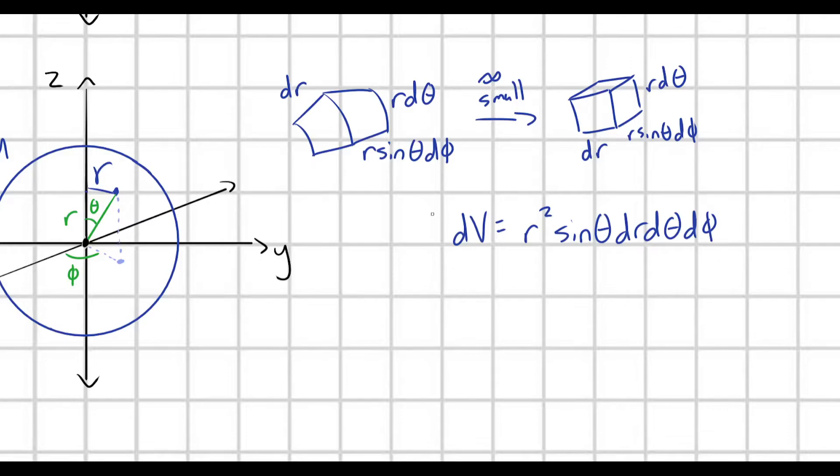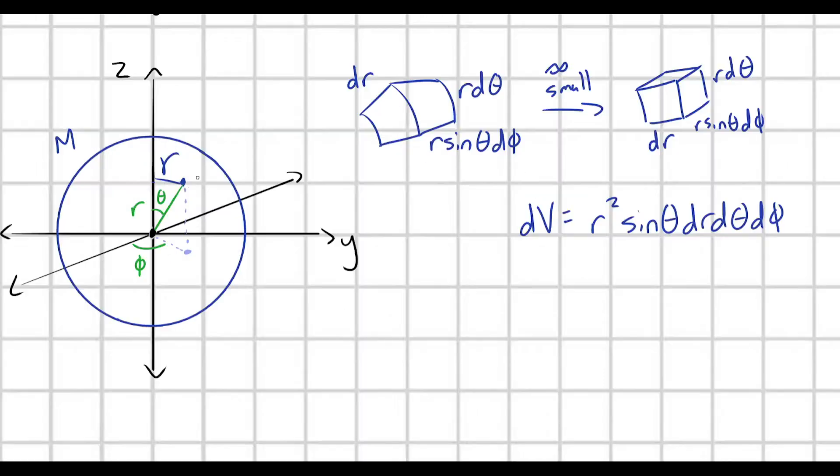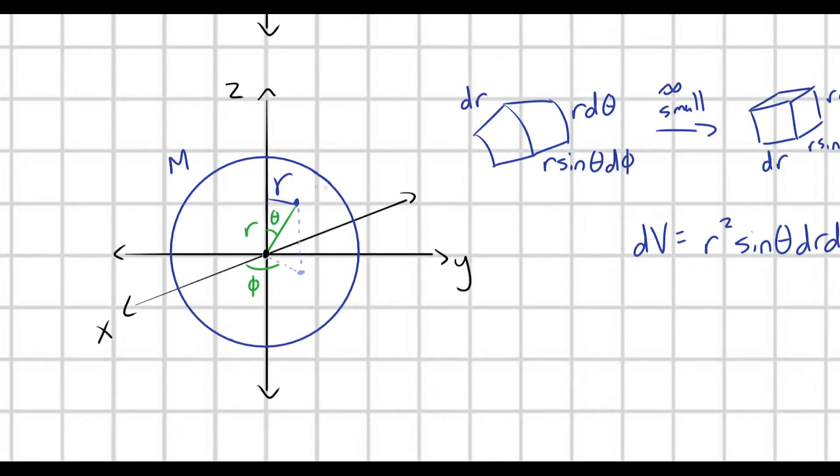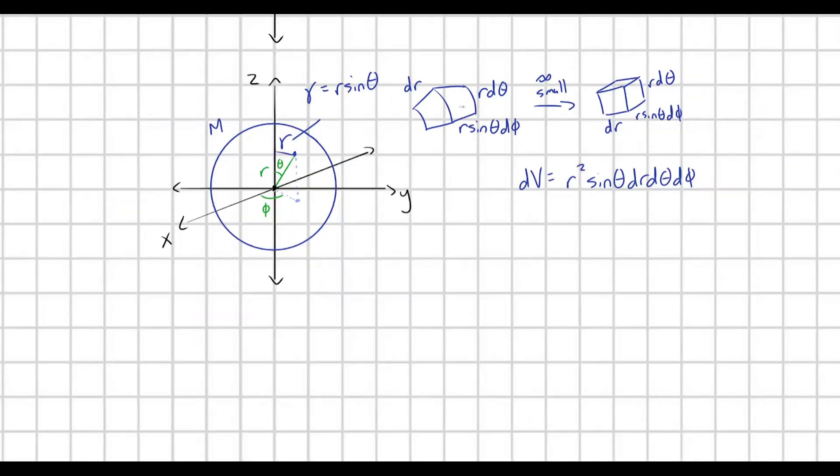But we're just going to be using this result. Let's also note that gamma, this distance gamma, let's go ahead and write that out in terms of r and theta. And so, of course, we can clearly see that we have a right triangle here. There's a right triangle right there. And so, gamma, this is going to be equal to gamma equals r times sine theta.